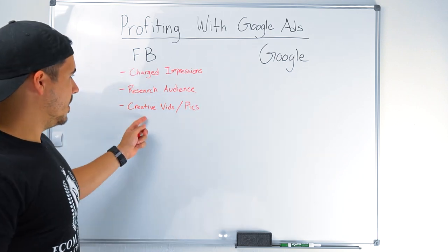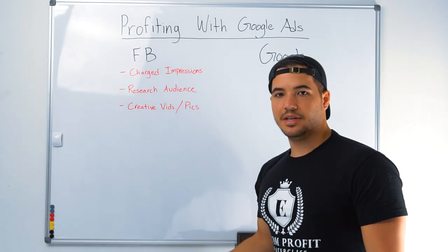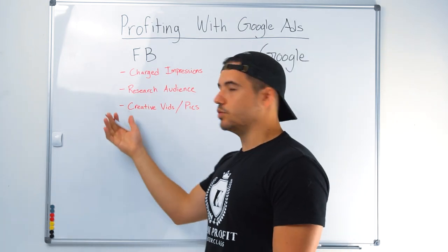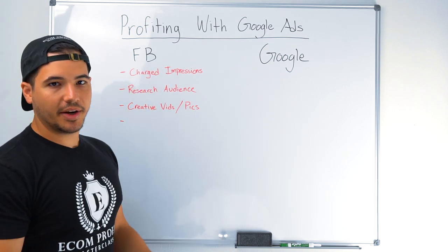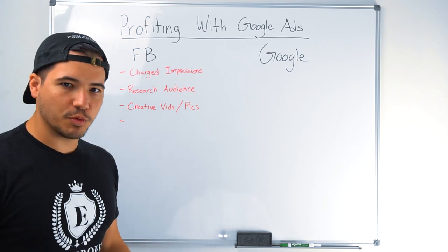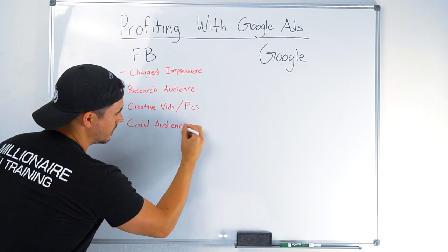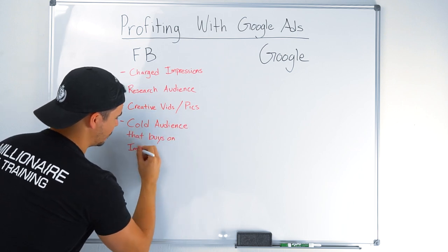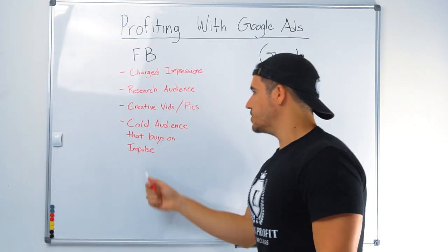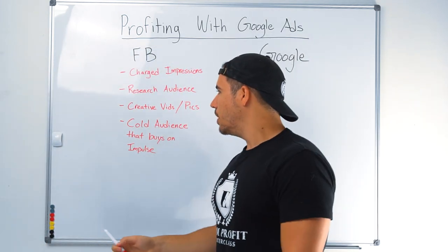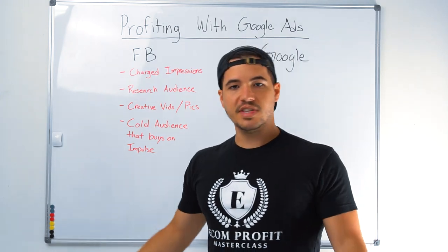You also have to make a creative — a video, a picture — something that when your audience sees it, they're going to be interested and want to buy your product. The audience on Facebook, since we're just showing them an ad they've never been exposed to before, is generally a cold audience. And this is probably the biggest thing about Facebook: the audience is people who aren't necessarily looking for what you're selling, but when they see it, for whatever reason, they want to buy it.